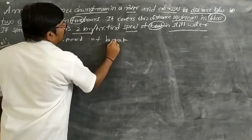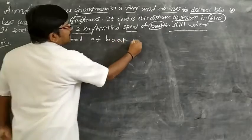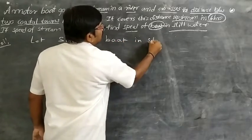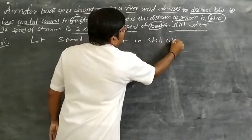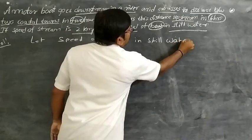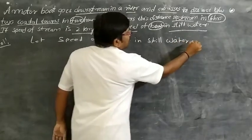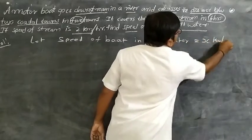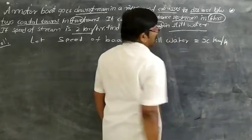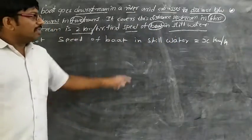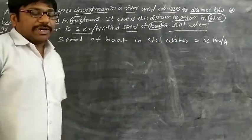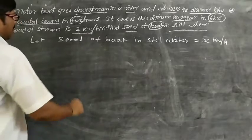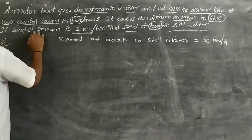Let the speed of the boat in still water be X km per hour. That is the required speed of the boat in still water — X km per hour.